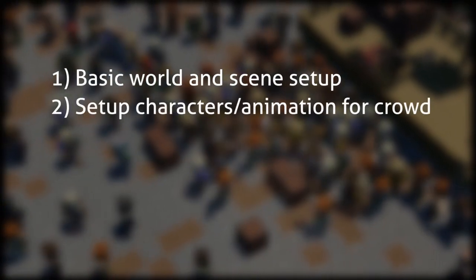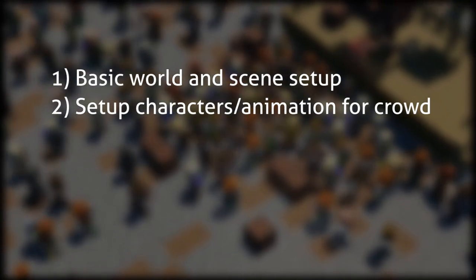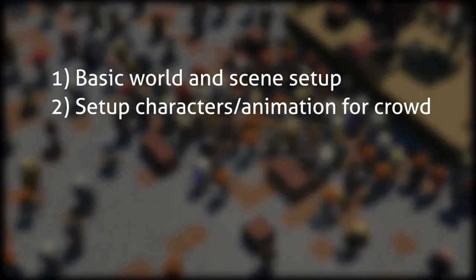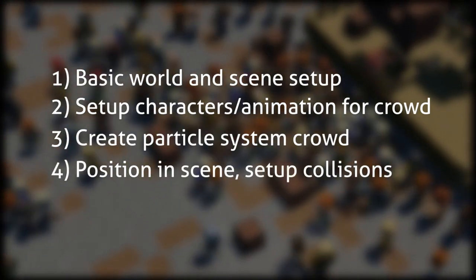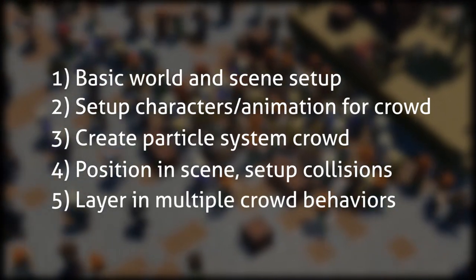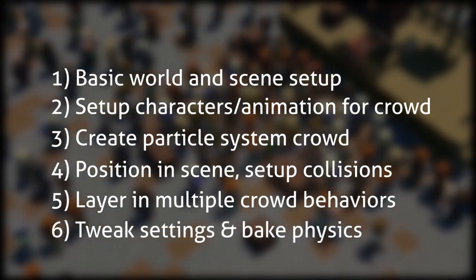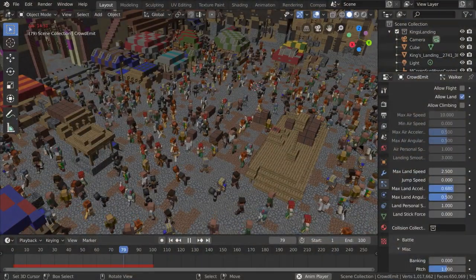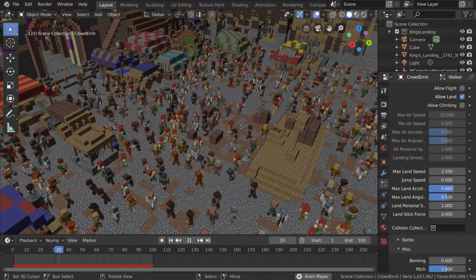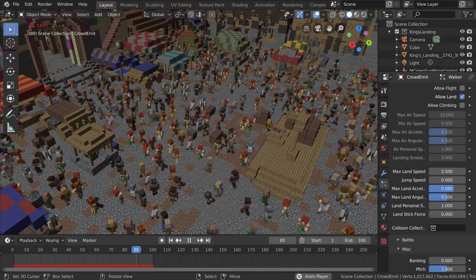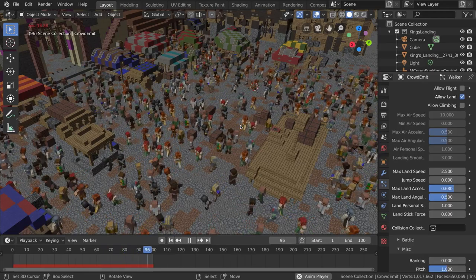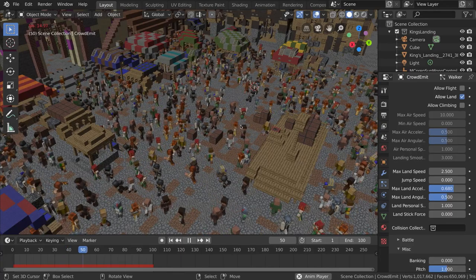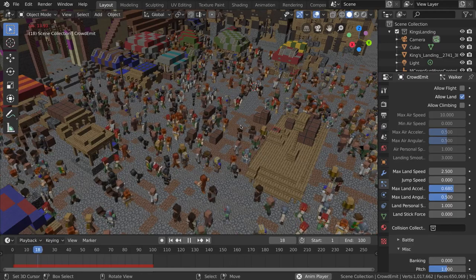As a recap: we imported a world and did some prepping, added characters and adjusted their animations, created our particle system, set up collisions for our simulation, then layered in a couple of crowds for different behaviors. Finally, we tweaked some settings and baked our animation. I may create a tutorial about the shape key player and creating shape key animations in the future — comment below if that'd be useful. Check out the other tutorials and definitely let me know if you create any crowd simulations this way. Until next time, and happy blending!